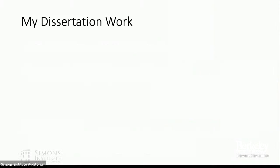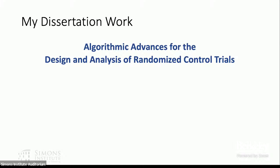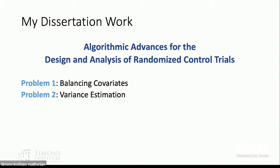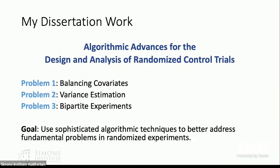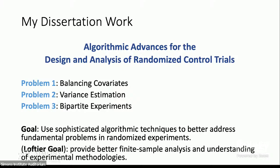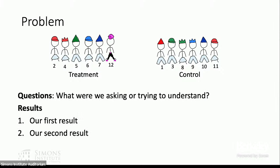My dissertation title was 'Algorithmic Advances for the Design and Analysis of Randomized Control Trials.' In my dissertation I focused on three major problems: the first was how to balance covariates in randomized control trials, the second was variance estimation, and the third was so-called bipartite experiments. I'll briefly discuss all three. The overall goal is to use sophisticated algorithmic techniques to better address fundamental problems that come up in randomized experiments, with the lofty aim of providing better finite-sample analysis and understanding of experimental methodologies.